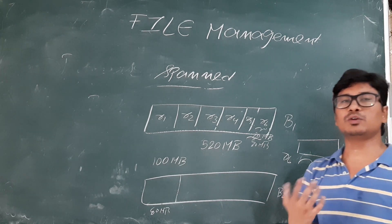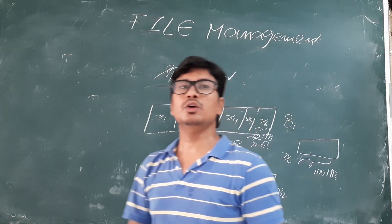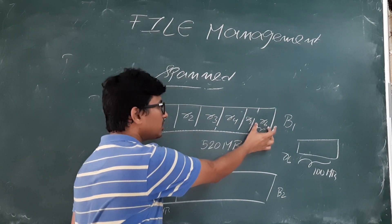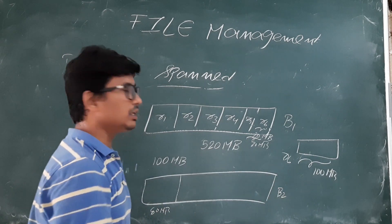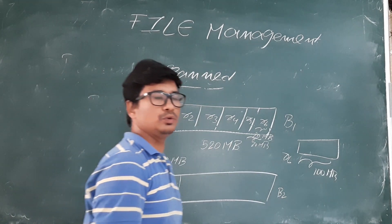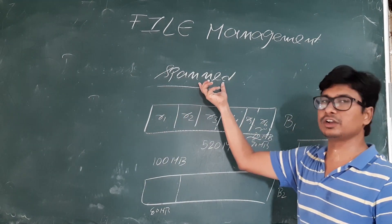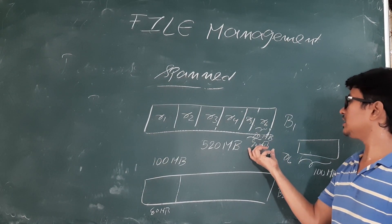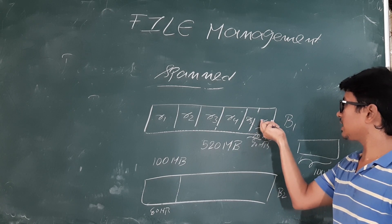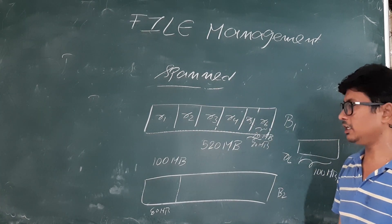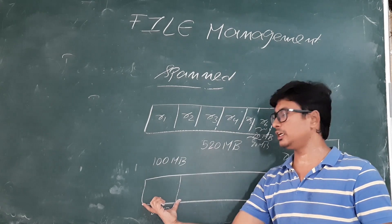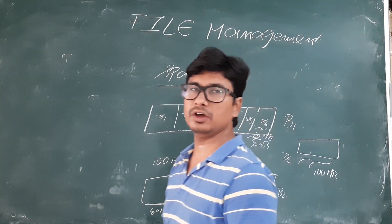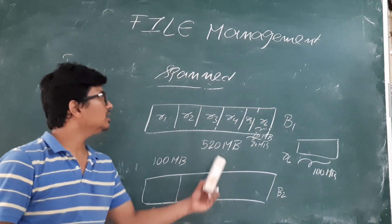The advantage of the spanned strategy is that we are not wasting memory. If we had not kept part of record 6 in block 1, then 20 MB would have been wasted. To avoid wasting memory, they have gone for the spanned strategy. In the spanned strategy, where we have 20 MB of space, we keep part of record 6 there, and the remaining part in block 2.